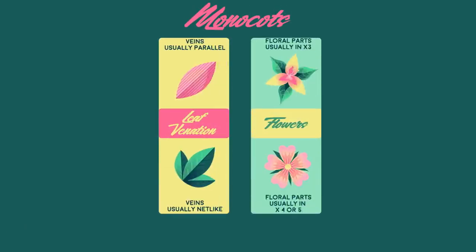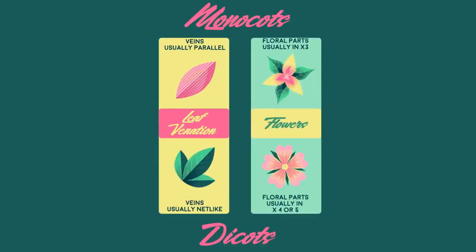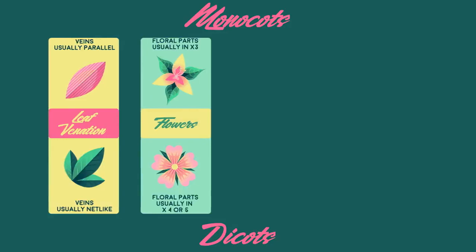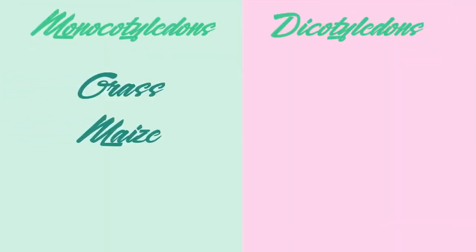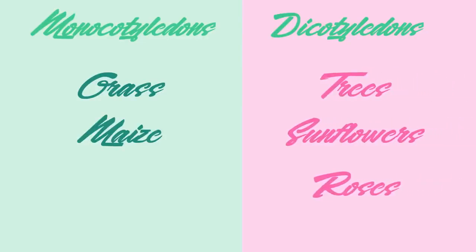Some observable differences are that monocots have parallel veins and petals in groups of three, whereas dicots have net-like veins and petals in groups of four or five. There are other differences as well, but we don't need to worry too much about these at this stage. Grass and maize are examples of monocots, whereas trees, sunflowers, and roses are examples of dicots.